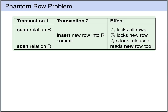So what is the phantom row problem? We have two transactions. First, transaction 1 scans the relation R — it looks over all the rows and obtains a lock on all of them. Next, transaction 2 inserts a new row into relation R, obtains a lock on this new row, and when done, releases the lock. Then transaction 1 again scans the entire table R and suddenly sees an additional row — the new row inserted by transaction 2.